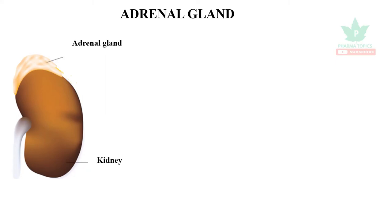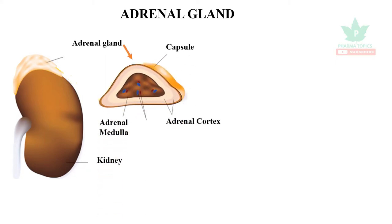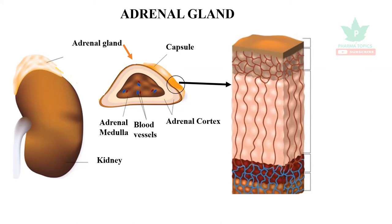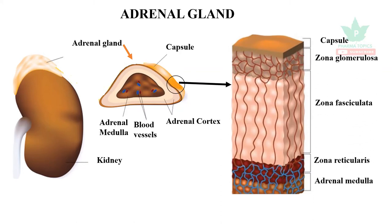Welcome to our pharma topics channel. Our topic of discussion is the hormones released from the adrenal gland and the drugs acting on it. Before entering into it, let us see the histology of the adrenal gland. The adrenal gland, which is a cap above the kidneys, has important portions such as adrenal medulla and the cortex. The adrenal cortex has different layers: zona glomerulosa, zona fasciculata, zona reticularis, followed by adrenal medulla.